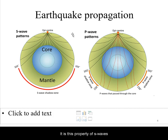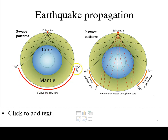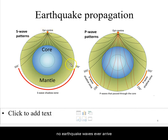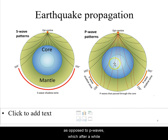It is this property of S waves that reveals to us that the outer core must be of liquid form, because opposite the epicenter of an earthquake, no S wave ever arrives — as opposed to P waves, which after a while are still detectable on the other side of the Earth.